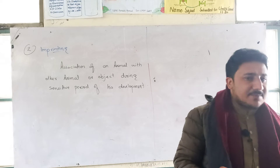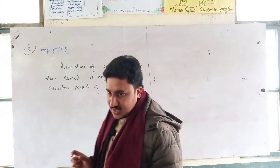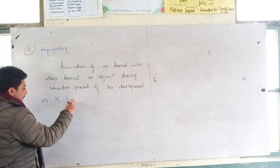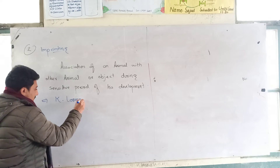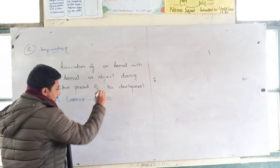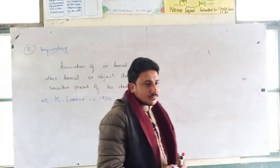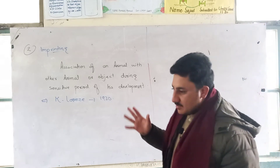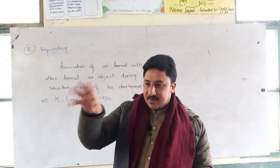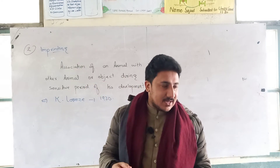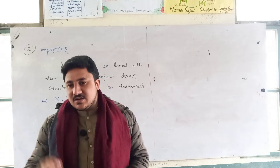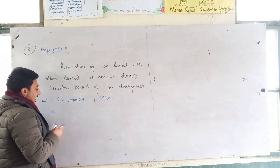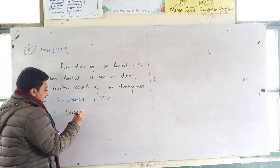For example, among geese, imprinting was reported for the first time by Konrad Lorenz in 1930. He reported this interesting behavior in gray lag geese.